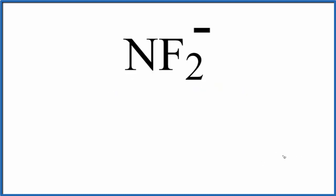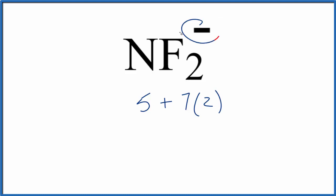So let's do the Lewis structure first. We'll count the valence electrons up. Nitrogen is in group 15, sometimes called 5A, so that has 5. Fluorine is in group 17, it'll have 7, and we have two of those. Then we have to add one more for this negative charge — that's an extra electron. So we have a total of 20 valence electrons for the NF2- Lewis structure.